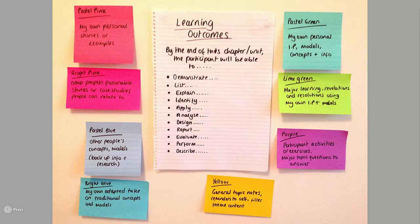Ideally you want an equal amount of each colour within each chapter so that you can make sequences that build learning. For every major theme or teaching, you'd have one personal story — pink — then apply your own model to that story, back it up with somebody else's concept — blue — then give some easier, more general information to digest — yellow — and just as they're rested, drop a major revelation or solution — green — and finally close it off with an exercise to cement their learning and let the practical people apply the theory for themselves.